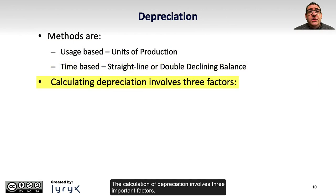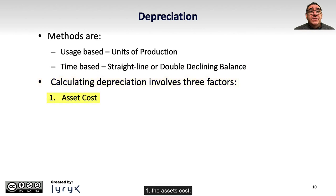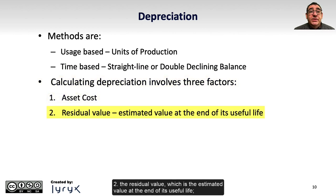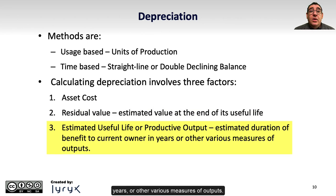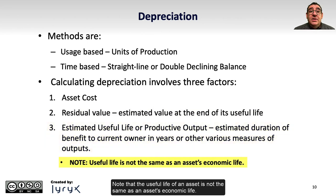The calculation of depreciation involves three important factors. One, the asset's cost. Two, the residual value, which is the estimated value at the end of its useful life. And three, the estimated useful life or productive output, which is the estimated duration of the benefit to the current owner in years or other various measures of outputs. Note that the useful life of an asset is not the same as an asset's economic life.